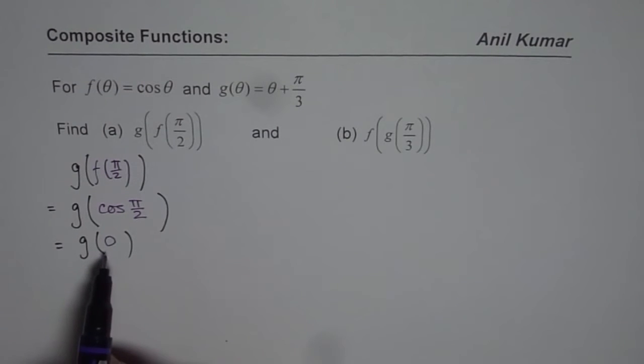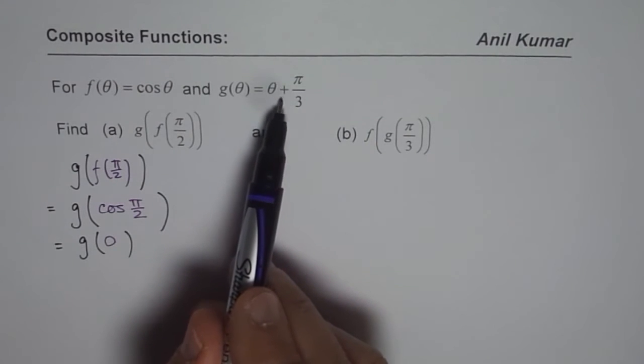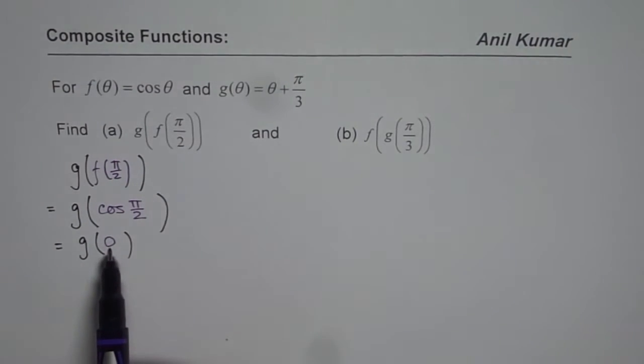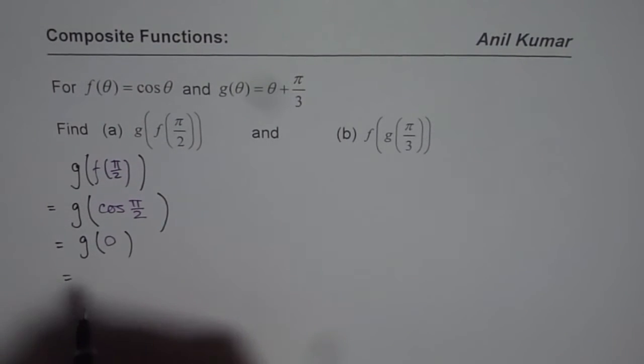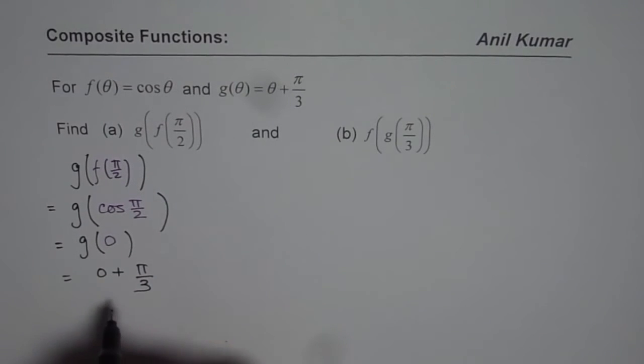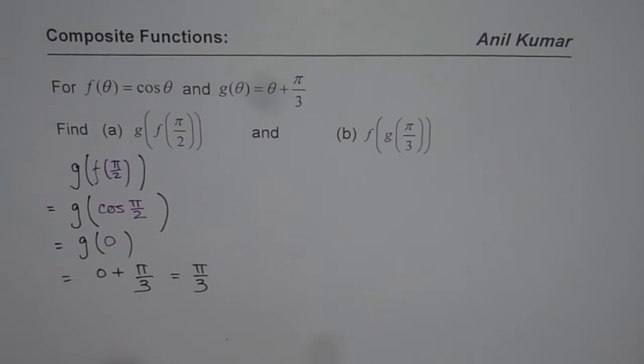Now we have to use the second function, which is g(θ) = θ + π/3, where θ is to be substituted by 0. So we get our solution which is 0 + π/3, and our answer is π/3. That is how you evaluate composite functions.